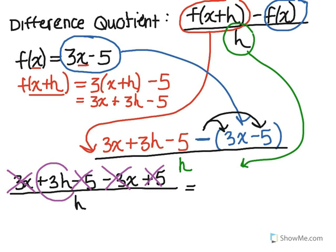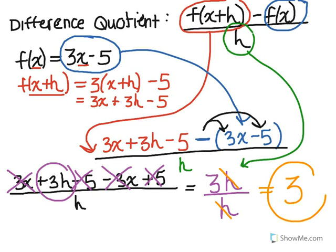So that leaves us in the top with only 3h. And then on the bottom we had always had the h. So we can do another cancellation here, because h divided by h is just 1. So that leaves us as our final answer of 3.